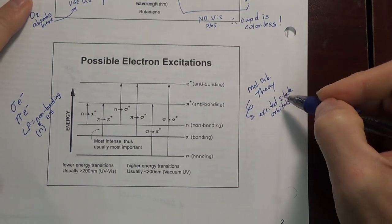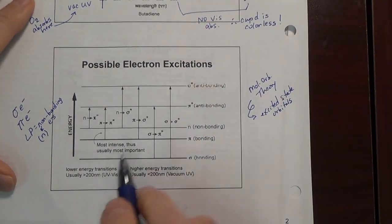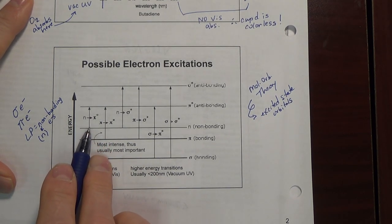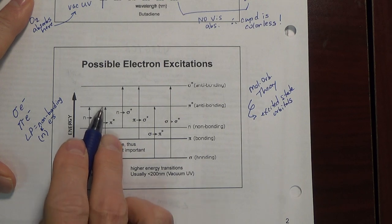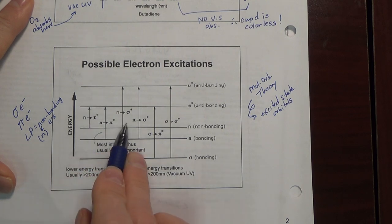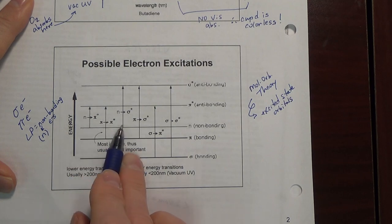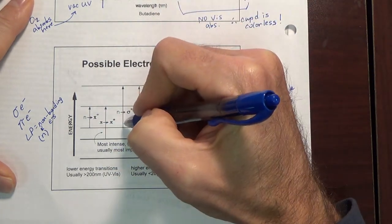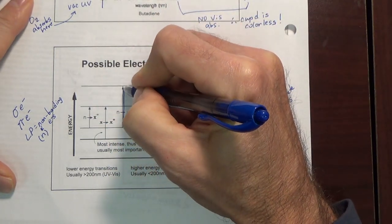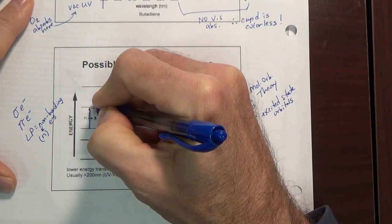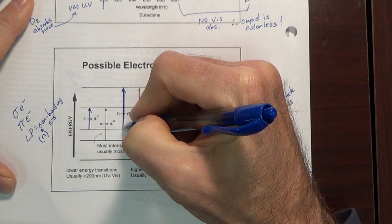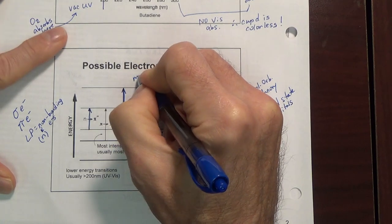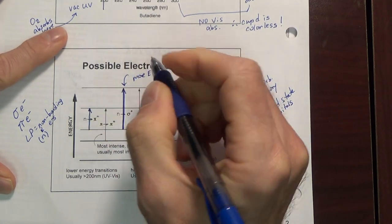Lone pair electrons and pi electrons can be excited to different excited state orbitals. Important here is the energy required — some transitions take more energy than others. Comparing two transitions here: this one requires more energy compared to this one.